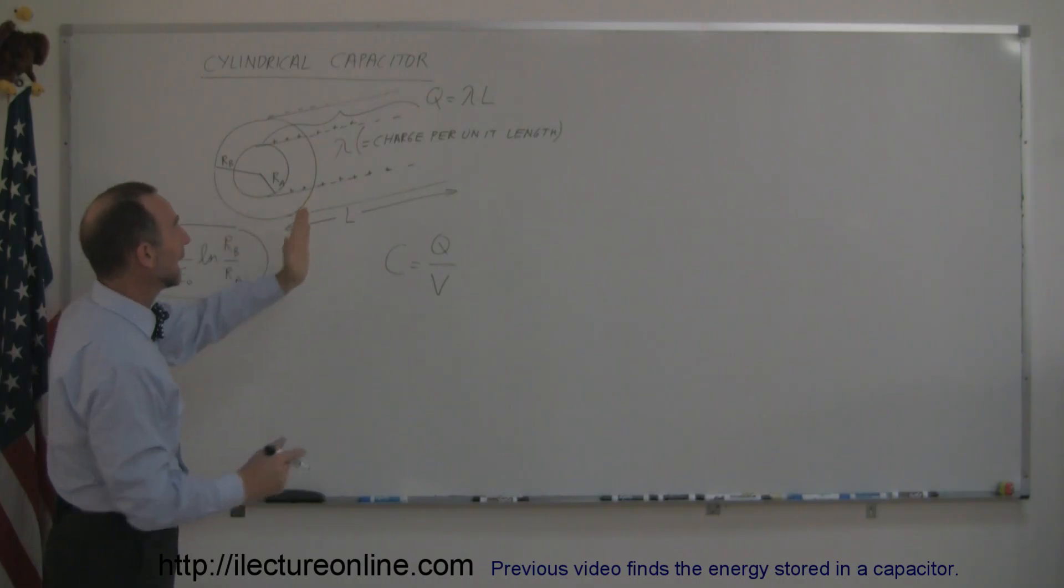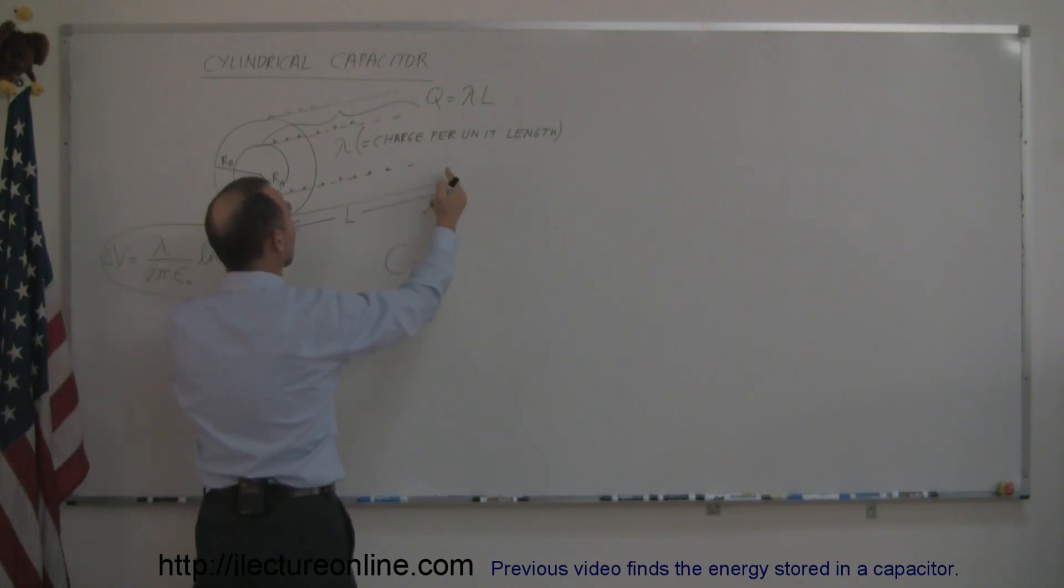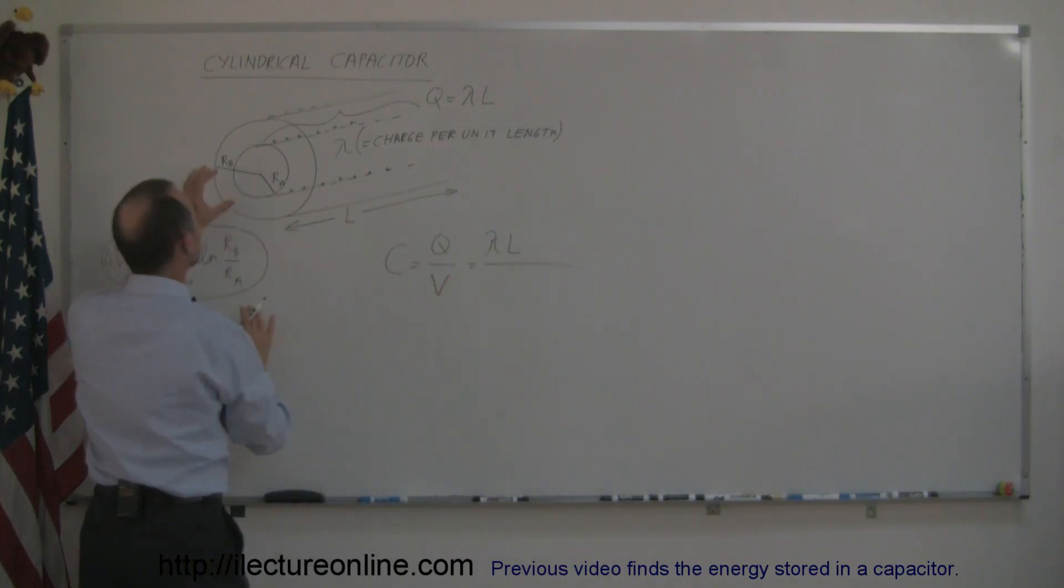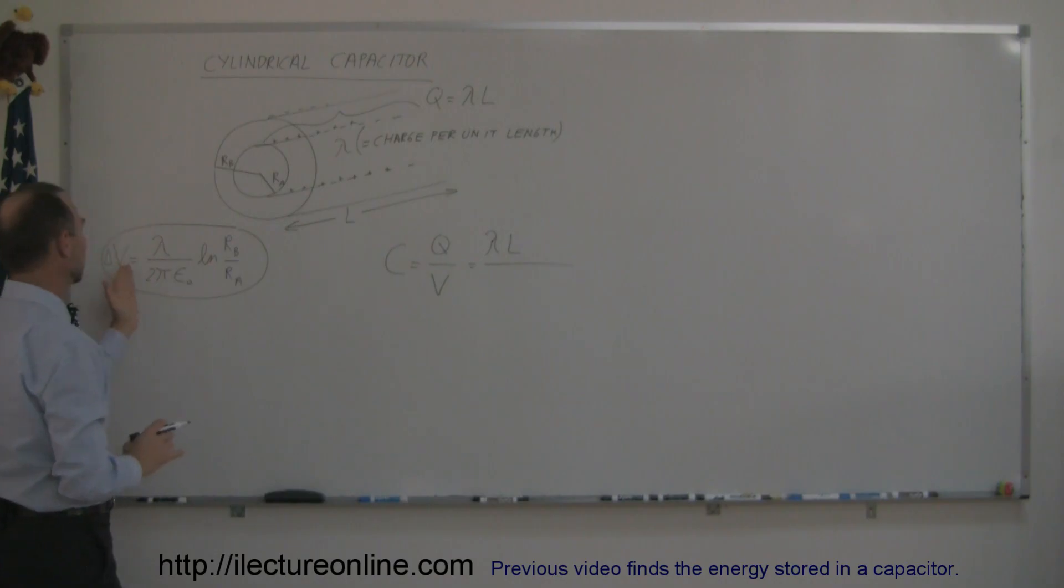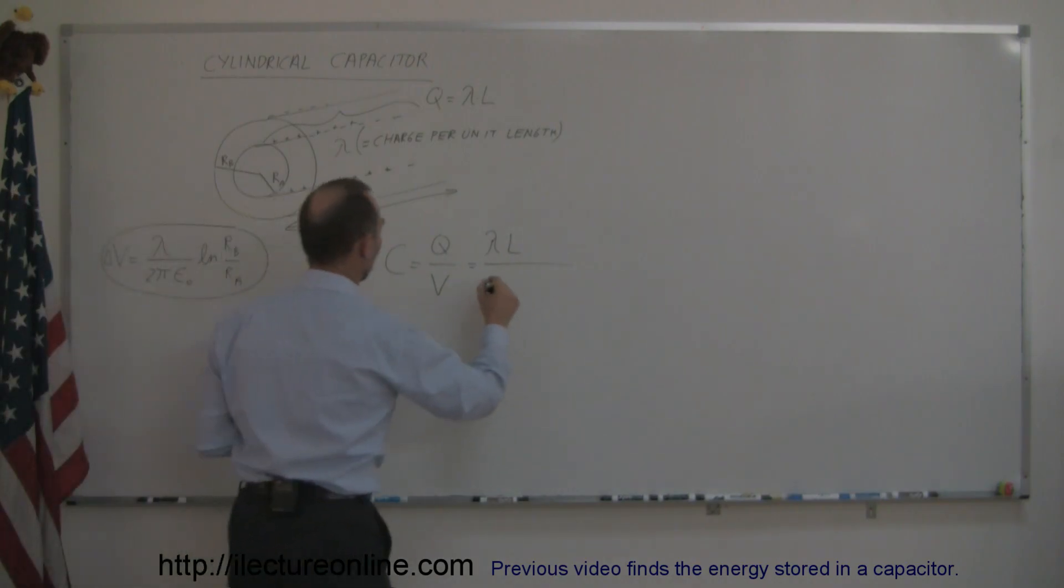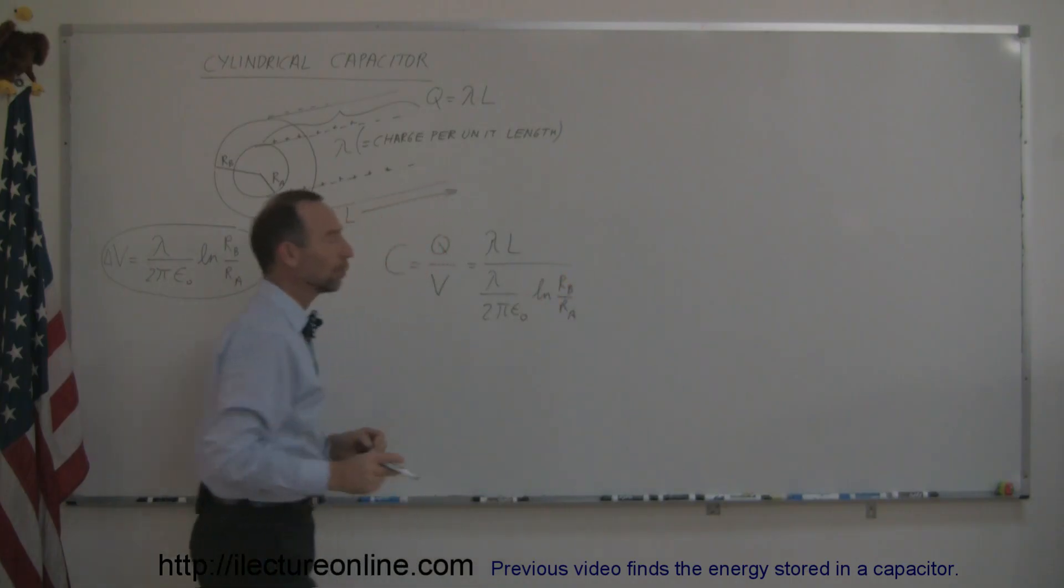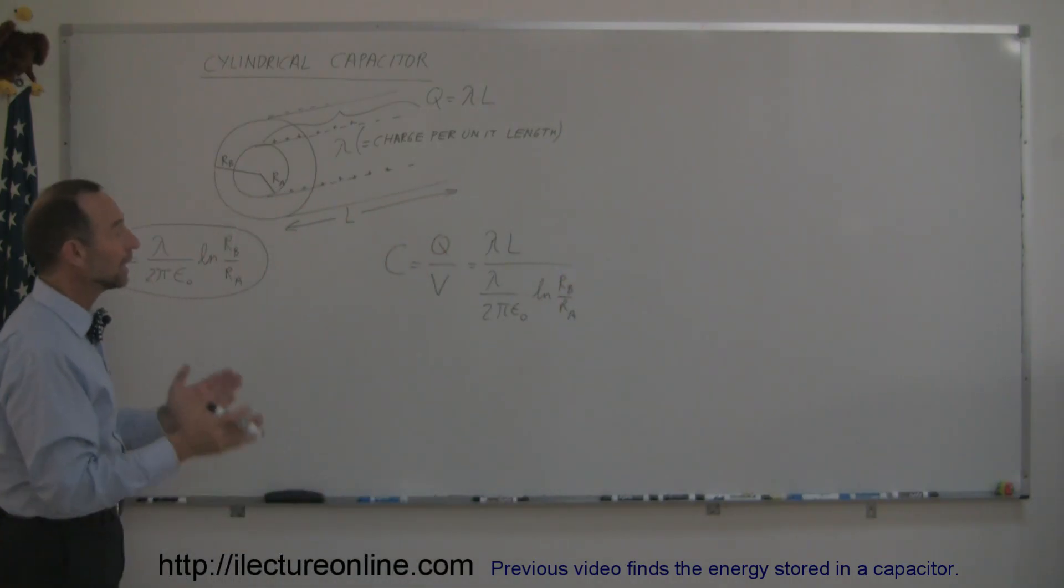the charge that we have on a length segment L on the capacitor would then be equal to lambda times L, and we divide that by the voltage between the two plates, and that would be the voltage right here, so we write this as lambda divided by 2 pi epsilon sub nought, times the natural log of Rb over Ra, which is simply the ratio of the outer radius to the inner radius.